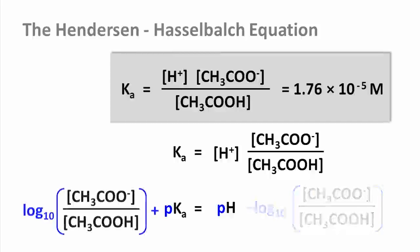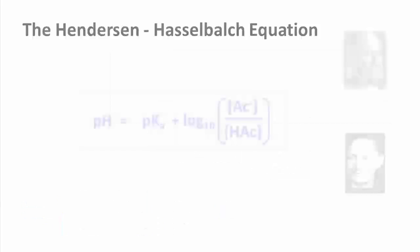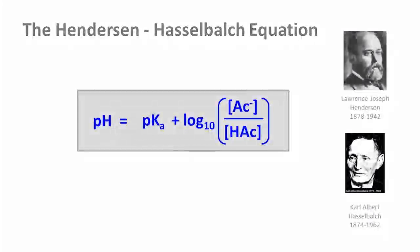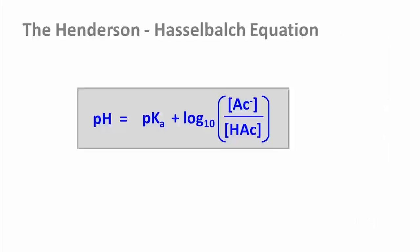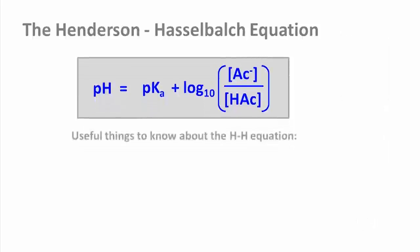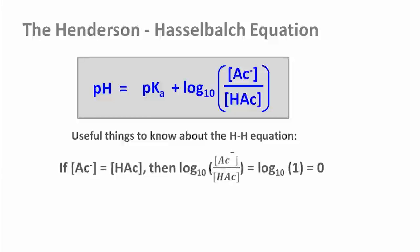If we now move it over to the other side of the new equation, what we get is known as the Henderson-Hasselbalch equation. One thing that becomes clear straight away is that if the term in brackets equals 1, the log becomes 0. In other words, if there is an equal concentration of acid and conjugate base, pH equals the pKa of the acid.